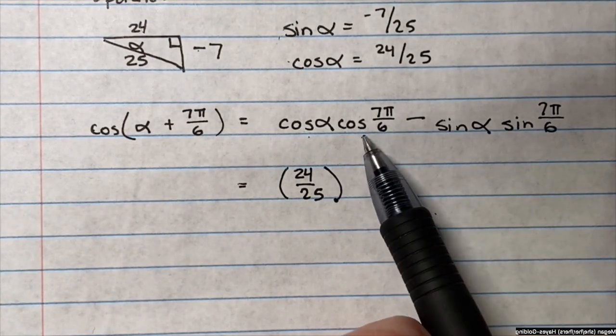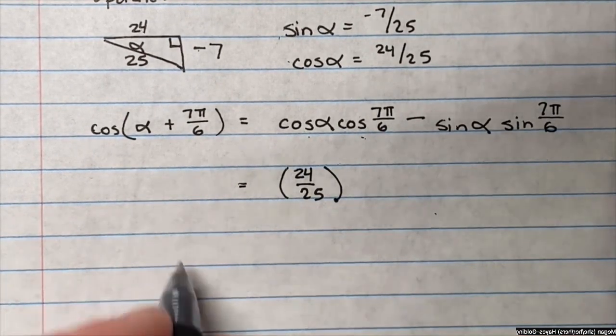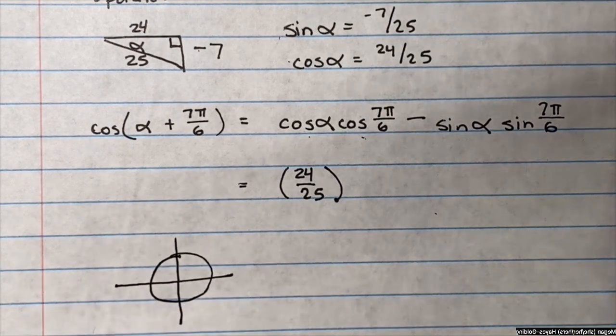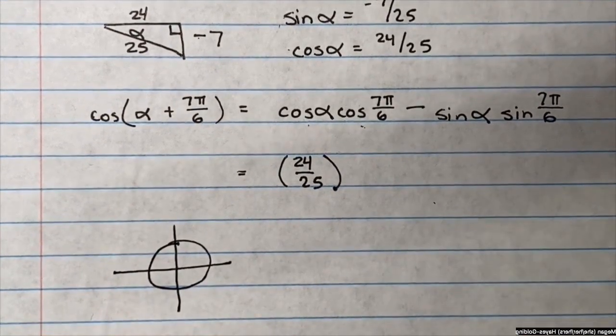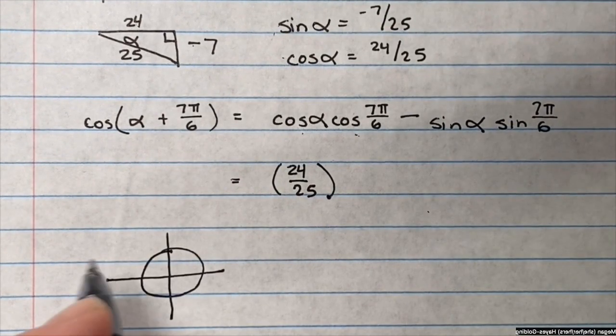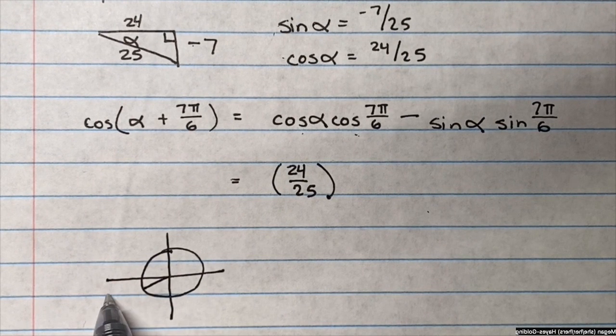I'm going to need to reference a unit circle to get this. So where is 7 pi over 6? Well, pi would be 6 pi over 6, so this is just one more past that.